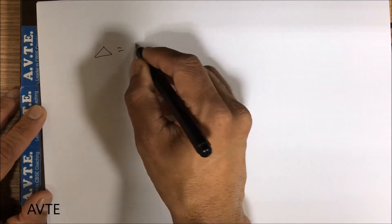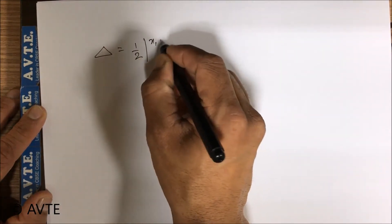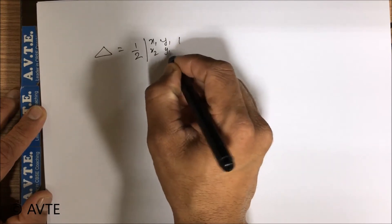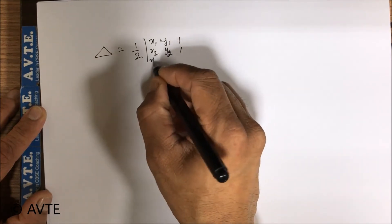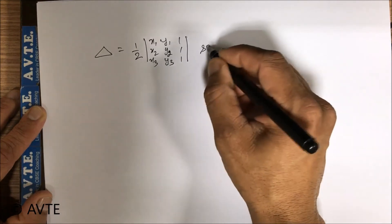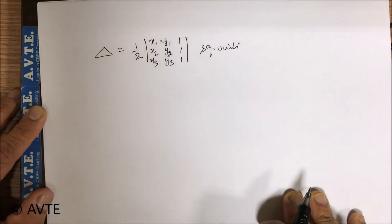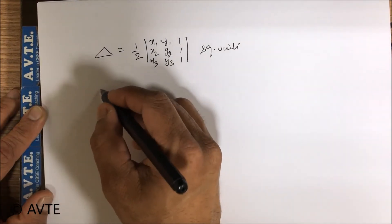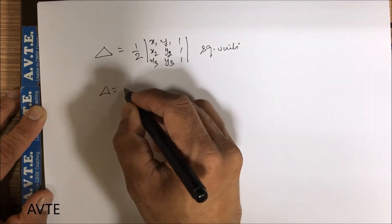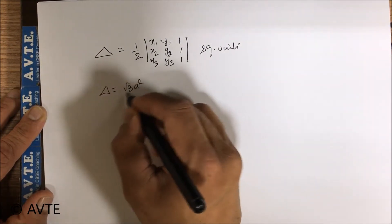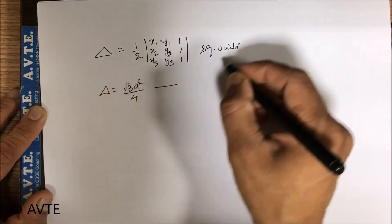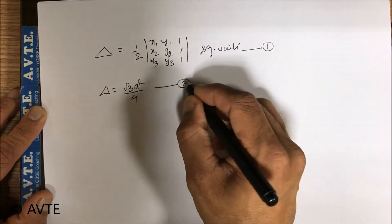Delta is 1 by 2 square units according to the definition of the determinant. An equilateral triangle area is root 3a squared by 4. Since according to the question both are same, therefore equating...